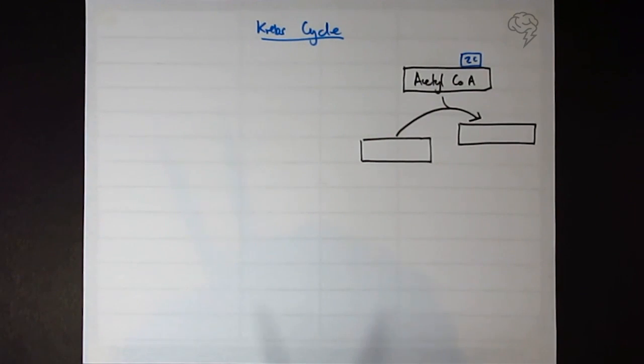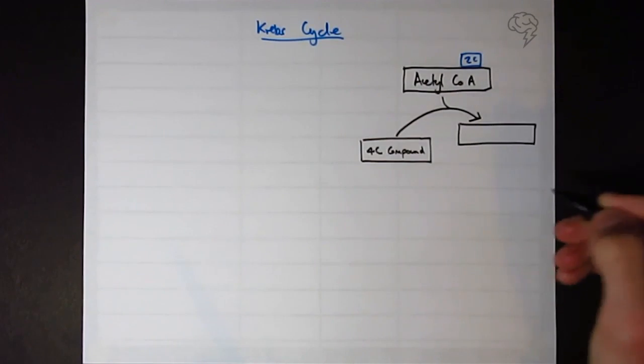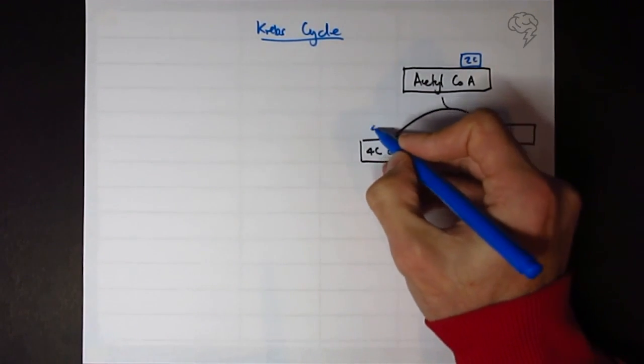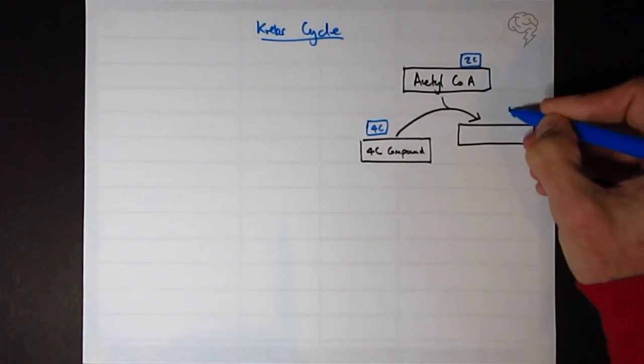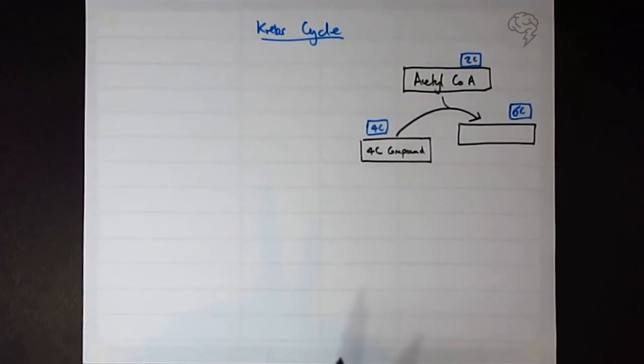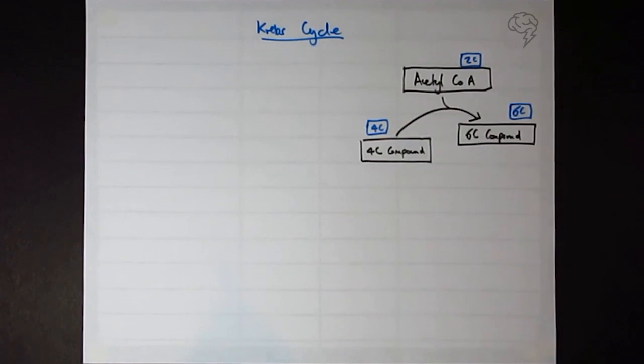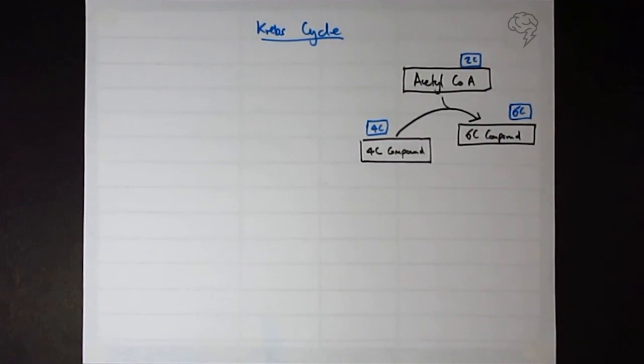We then are going to combine that. We don't need to know the names of these compounds. I'm not going to put the names on because it's more information than you need. So this is a four carbon compound, so 4C compound. And 4 plus 2 doesn't take a genius to figure out, but this compound here has got six carbons. So I'm just going to call this a 6C compound.